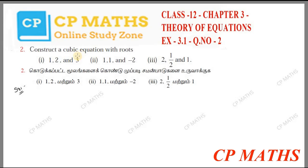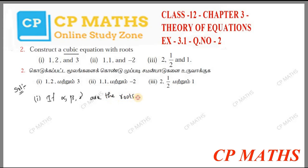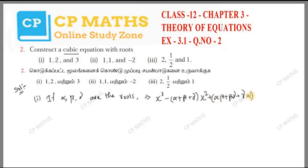Construct a cubic equation with roots. So for a cubic equation, we have a general formula: x³ minus (α + β + γ)x² plus (αβ + βγ + γα)x minus αβγ equals 0. This is the general form.